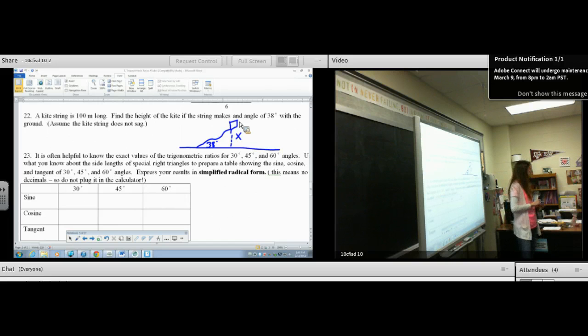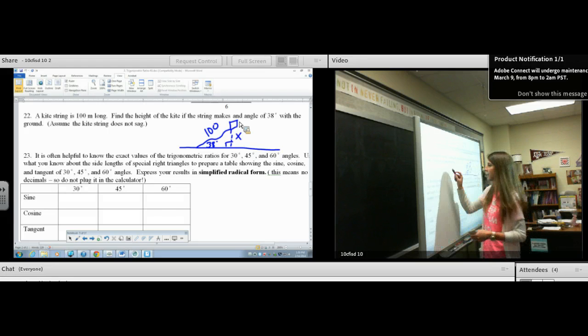The string is 100 meters long. Where do I put 100? On the string. Hypotenuse. On the string, Stephen. Okay. John, sine, cosine, tan? Opposite hypotenuse, very good choice. Sine is the right answer.